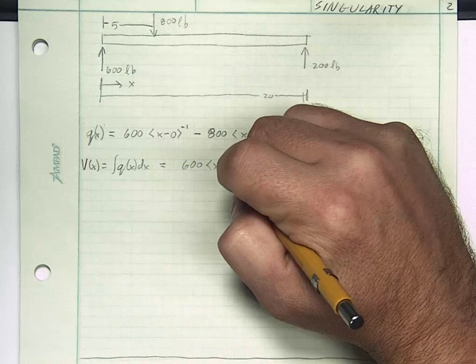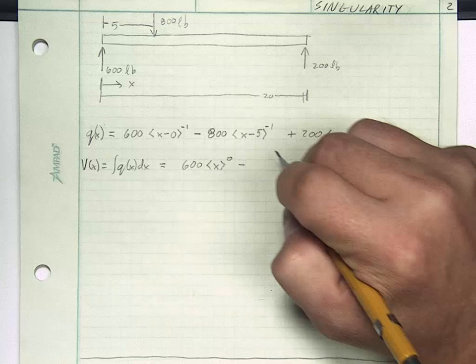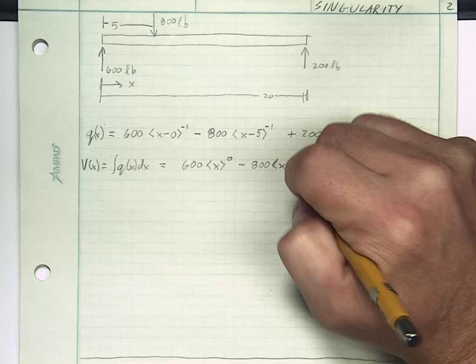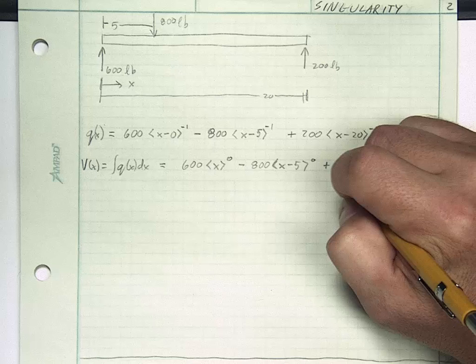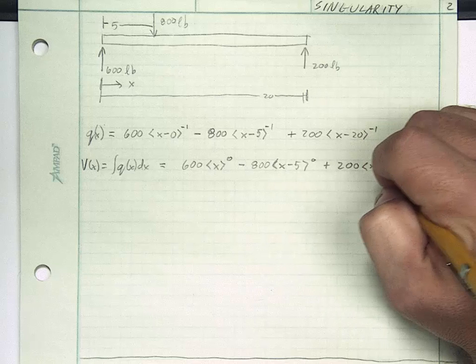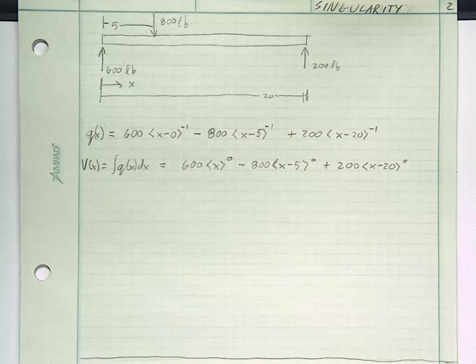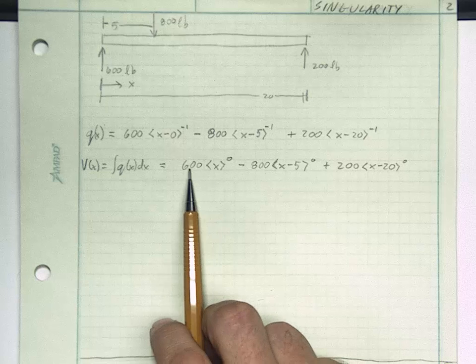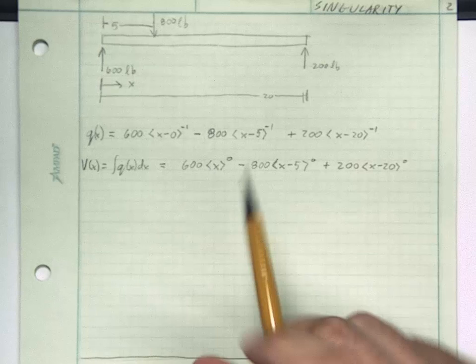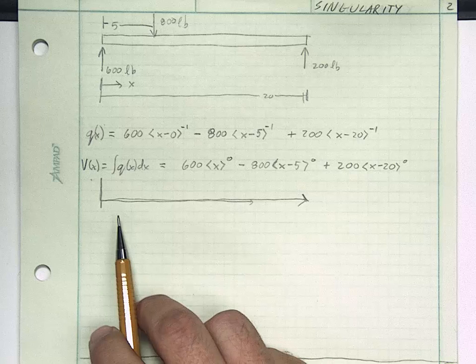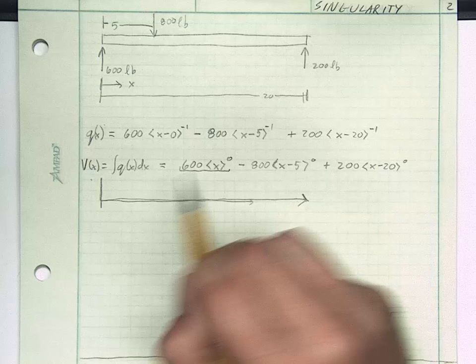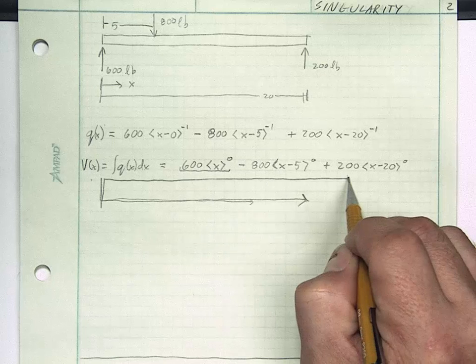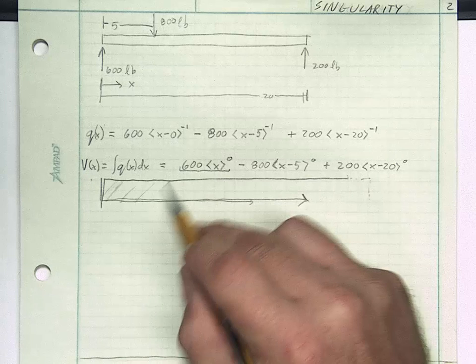Now if this works correctly, what I ought to be able to do is recognize that v of x is equal to the integral of q of x dx, which is going to be equal to 600. Now x minus 0 is the same thing as x. So x to the 0th minus 800 x minus 5 to the 0 power plus 200 x minus 20 to the 0 power. So now let's think about what this means. This means the 600 turns on immediately.